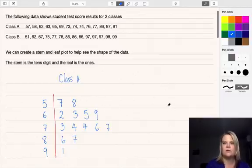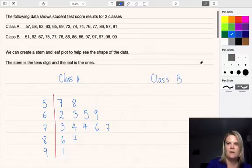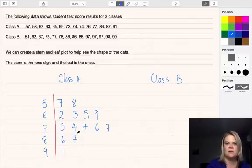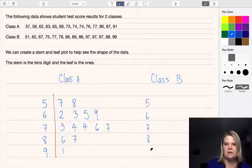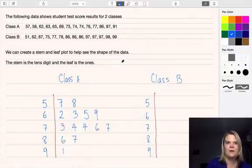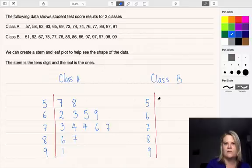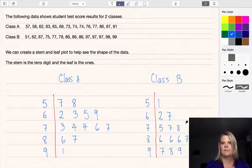I'm going to do the Class B stem plot over this side. So again I'll start with my stems. My lowest is 50, my highest is 90 so it's going to be the same stems. 60, 70, 80, 90. Rule a line and my lowest is 51 and it goes to 62 and there's my completed stem plot.